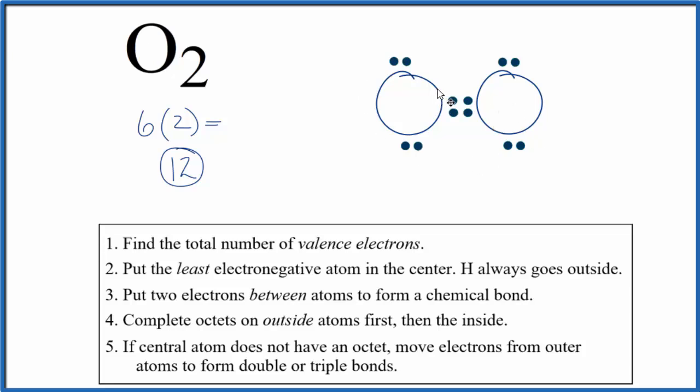Sometimes we'll see the double bond here drawn like this. Each line represents a chemical bond and it's a pair of electrons. So we still have our 12 valence electrons.